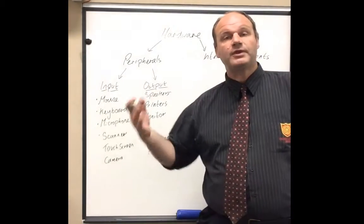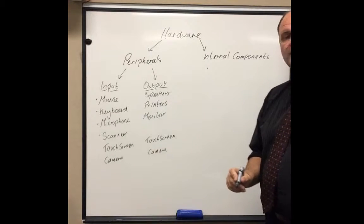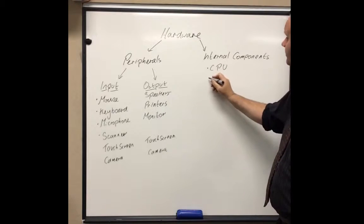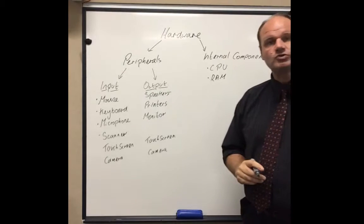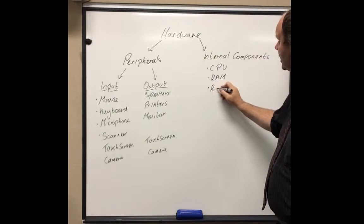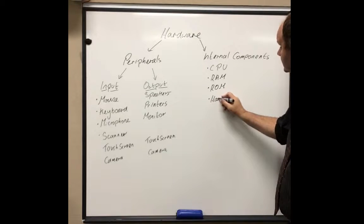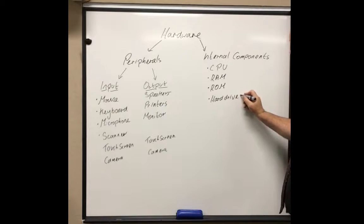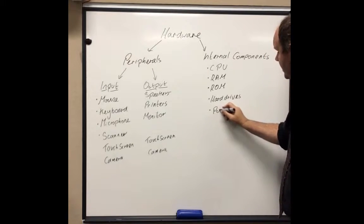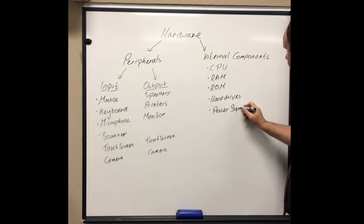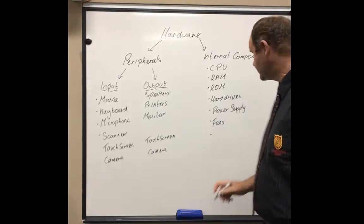Internal components are the ones found within a computer, and we will be touching on these in later lessons. The things we want to talk about would be the brains of the computer, which is the central processing unit. We'd also talk about random access memory, which is a type of storage; read only memory, which helps to get the computer up and running; the hard drive, which stores everything on our computer; and then various things like the power supply, fans, and various cards like sound card and graphics card.